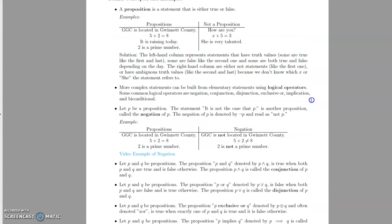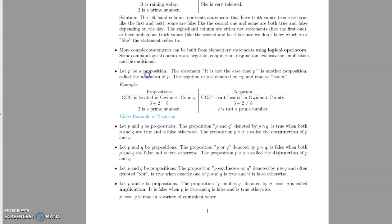Once we have propositions, we can build more complicated ones using what are called logical operators. The first is called the negation operator. We start out with a single proposition P, and the statement 'it is not the case that P' is another proposition — the negation of P. We write it with a little hook, and it's read as 'not P.' For example, if P is 'GGC is located in Gwinnett County,' the negation is 'GGC is not located in Gwinnett County.' If P is 'five plus two is eight,' the negation is 'five plus two is not eight.'